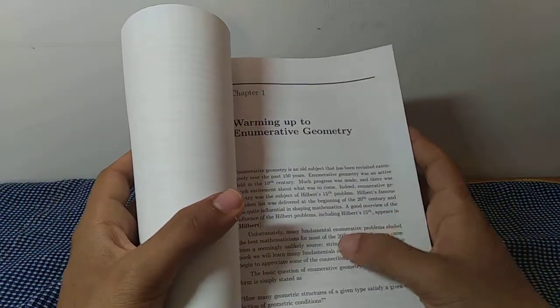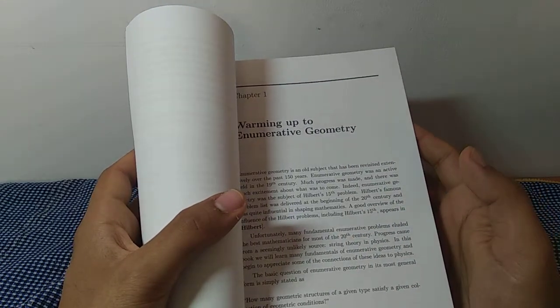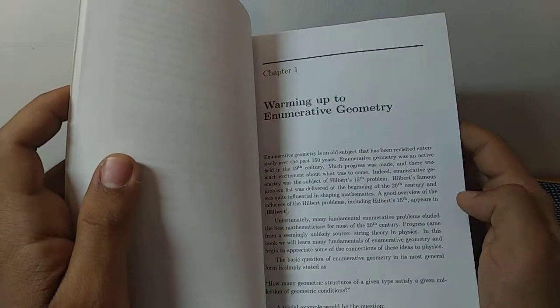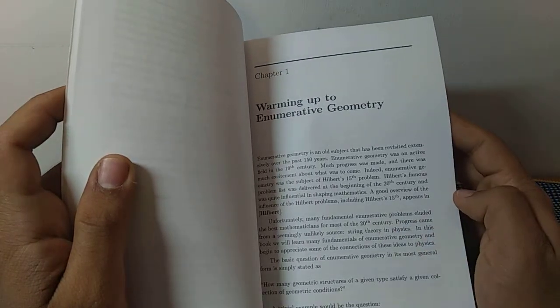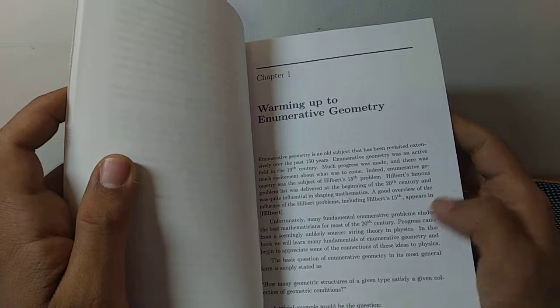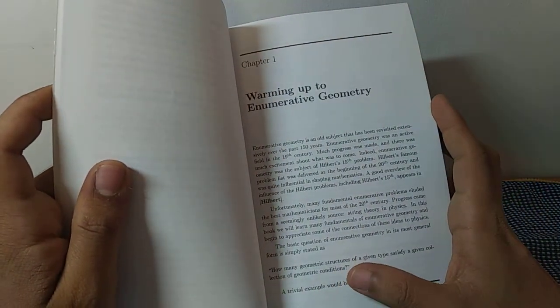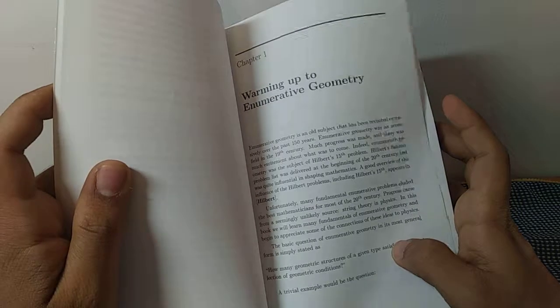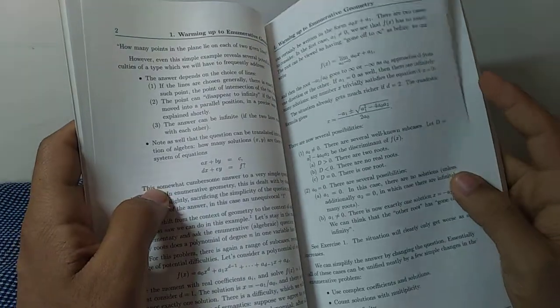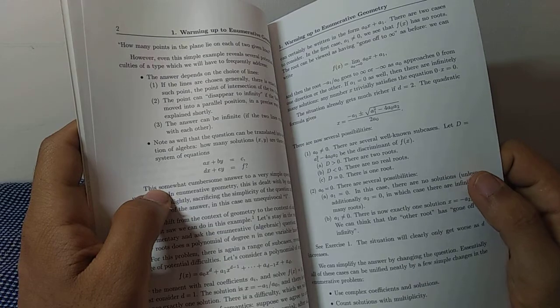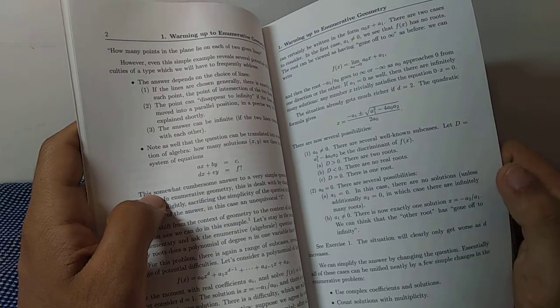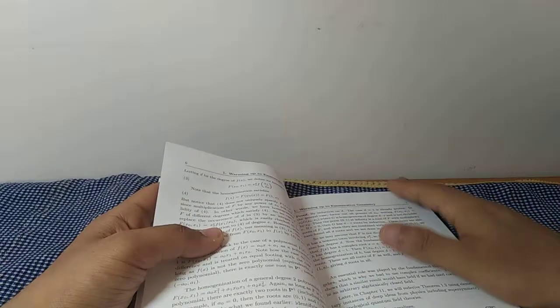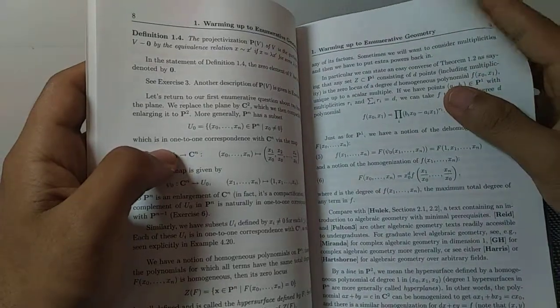There is basically the history of enumerative geometry when it started in the 20th century and Hilbert stated his 15th problem which has fundamentals of enumerative geometry and some kind of proof. The problem was how many geometric structures of a given type satisfy a collection of geometric conditions. Basic enumerative geometry tells that in how many ways can four lines intersect and there is only one answer or something like that given some test conditions and like that.